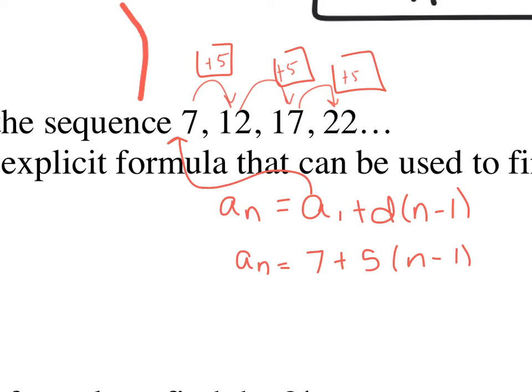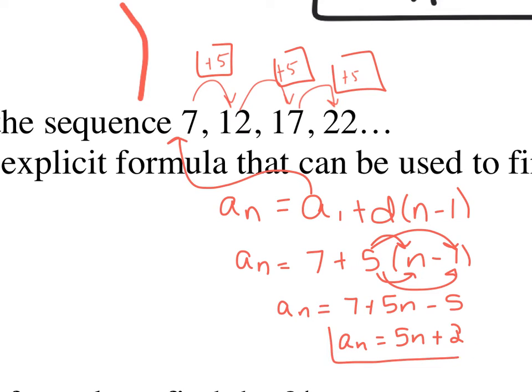What we want to see, we want to see you distribute that 5. And we want to see you combine your like terms. So I get a 7. 5 times n is 5n. And 5 times a negative 1 is negative 5. So I leave it as a minus 5. I now combine my like terms and I get a sub n equals 5n plus 2. Because 7 minus 5 is 2. That is your explicit formula that will be used to find the nth term.